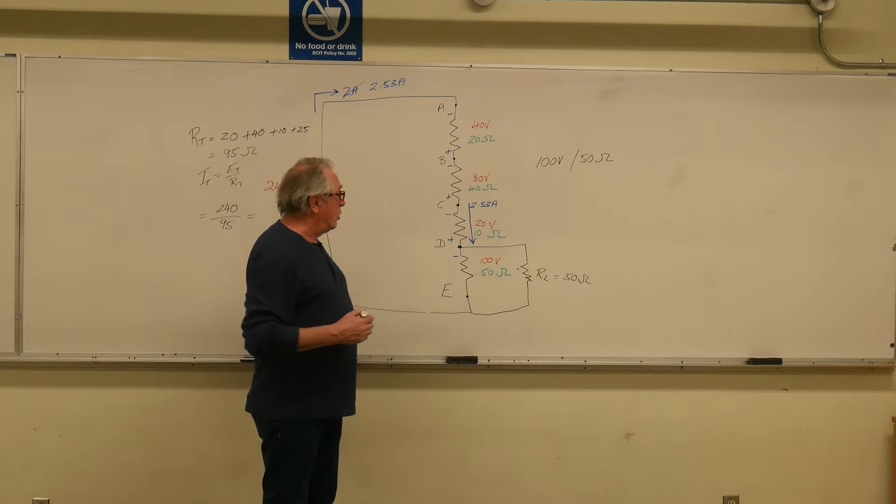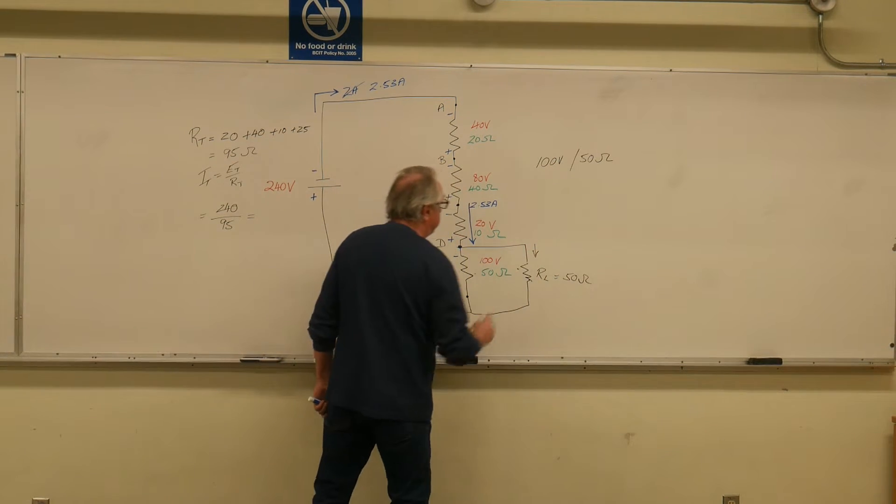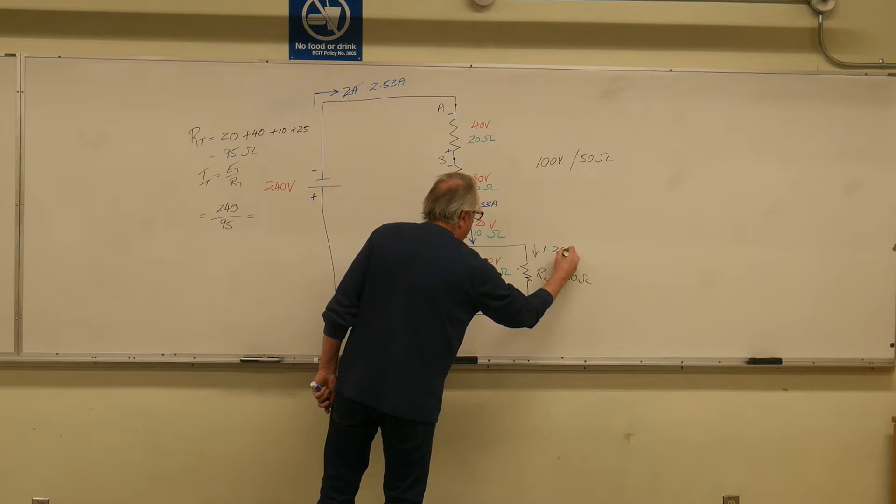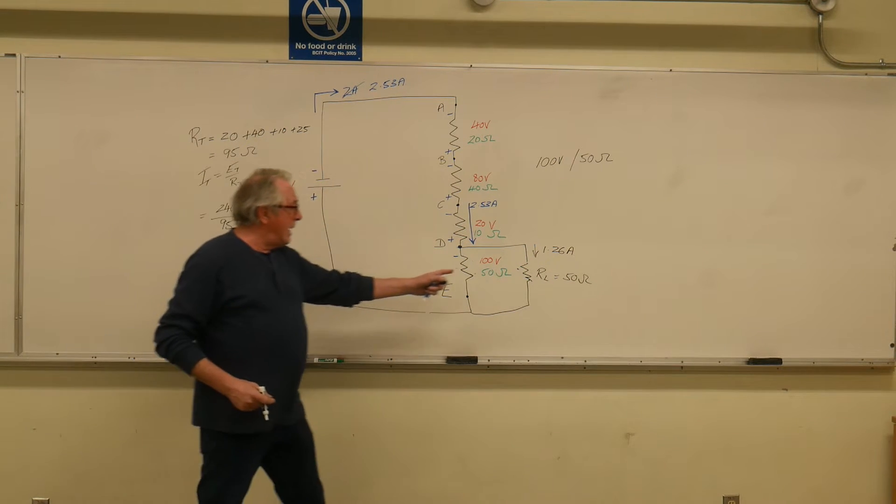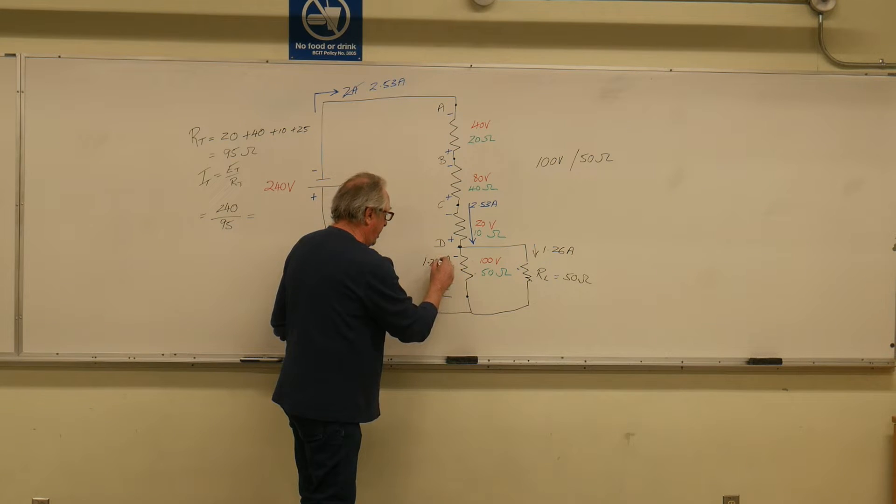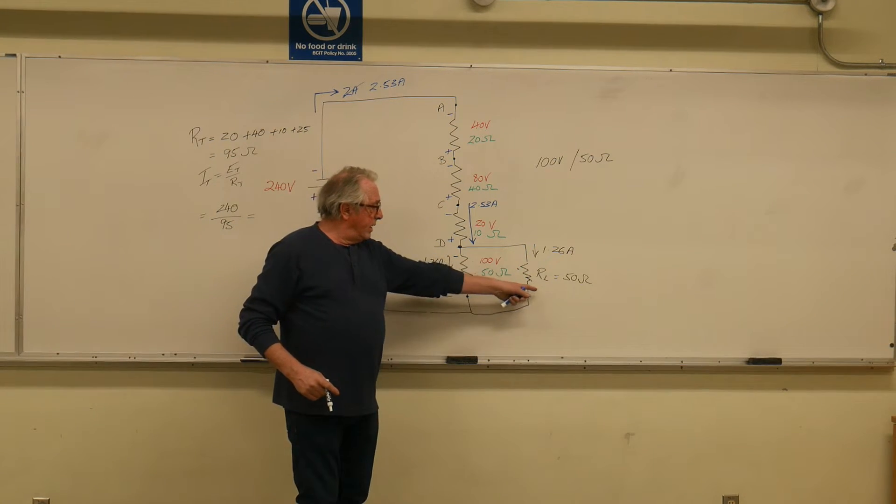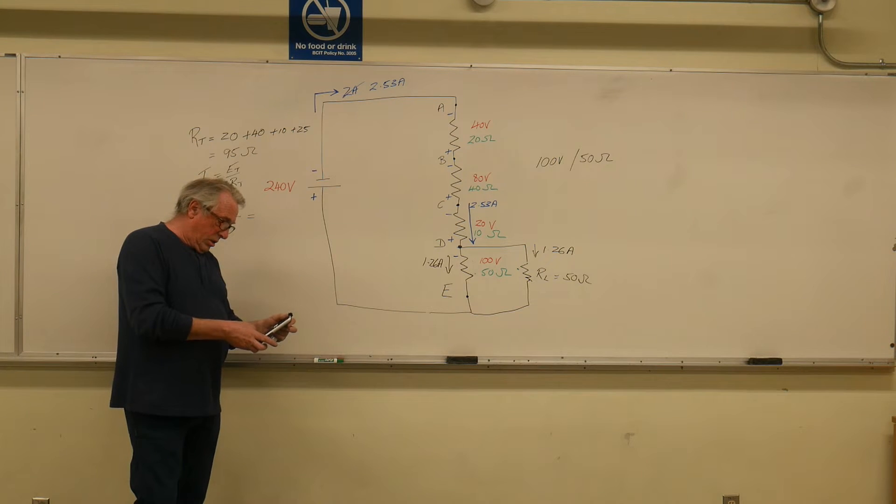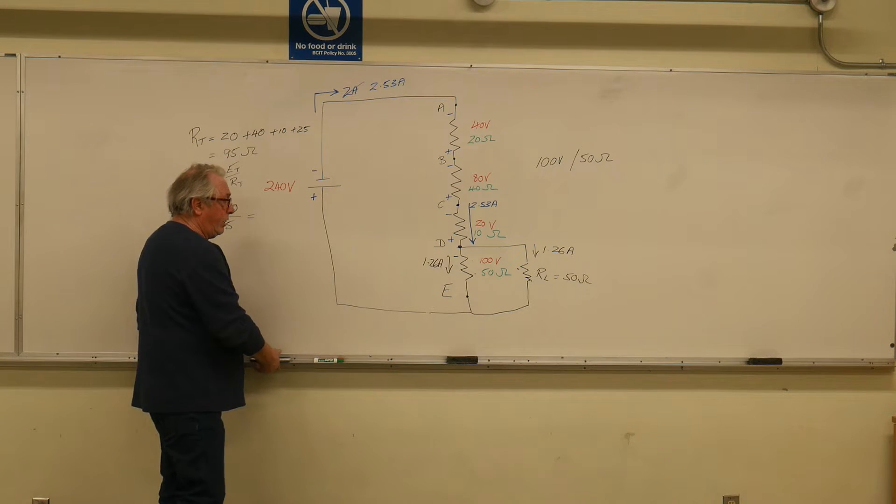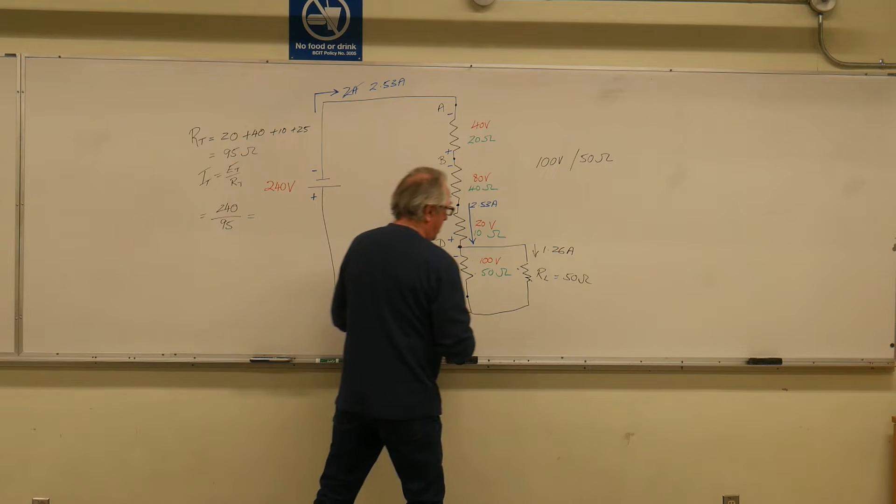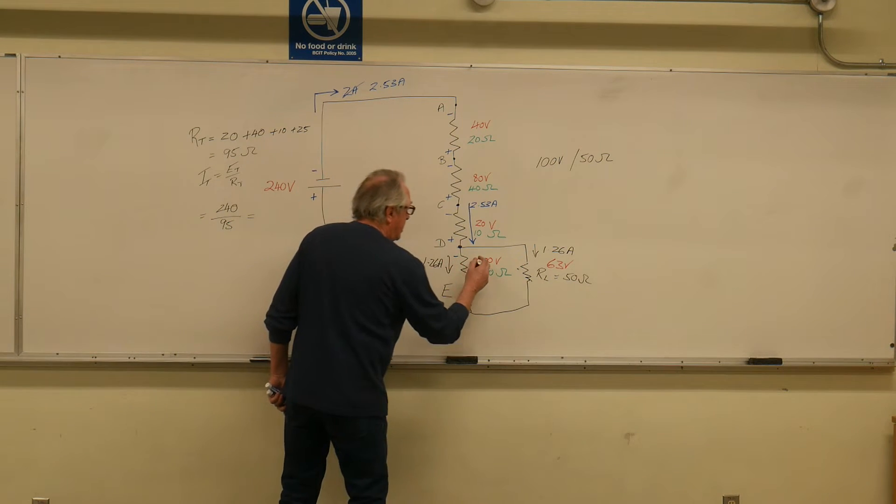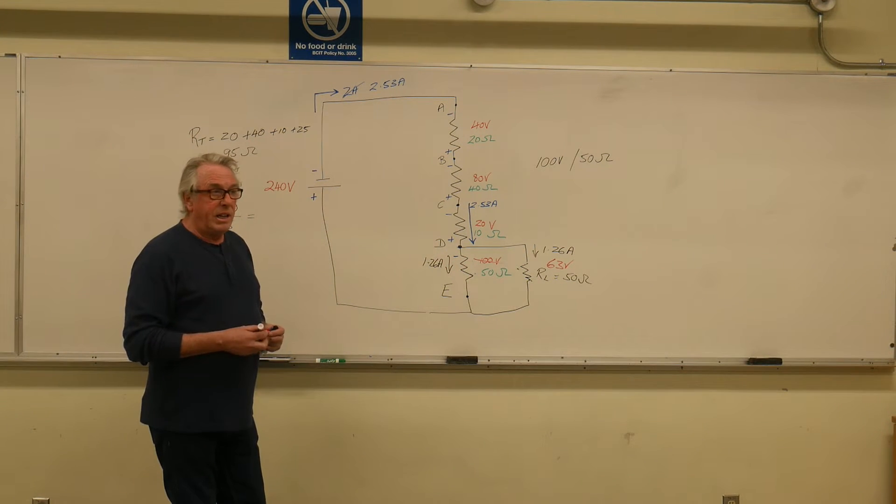It's 2.53 amps. Therefore, exactly half of that current will go through the load, which would be, do it in your head, 1.26, correct? Close enough. 1.26 amps is now going to go through here. 1.26 amps will also go through here. 1.26 amps and 50 ohms gives us how much voltage? Let's check it out. 63 volts. Not exactly what we were looking for, is it? It's not 100 volts. It's 63 volts now. Not what I wanted.